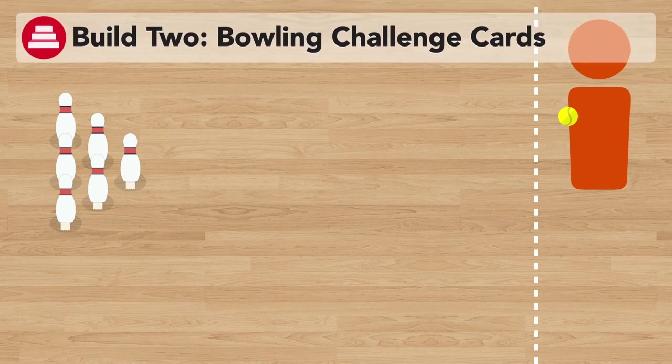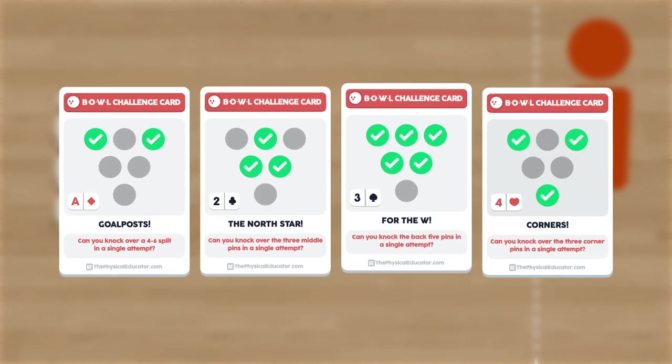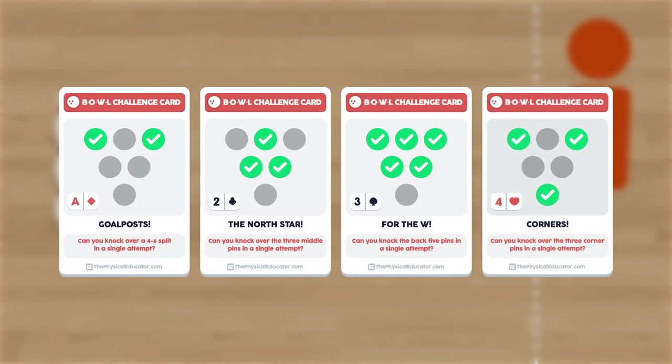In build 2, we're ready to explore a couple different pin formations. Print out the bowl challenge cards that your PE teacher is providing you with. If you don't have a printer at home, you can just use a set of playing cards.